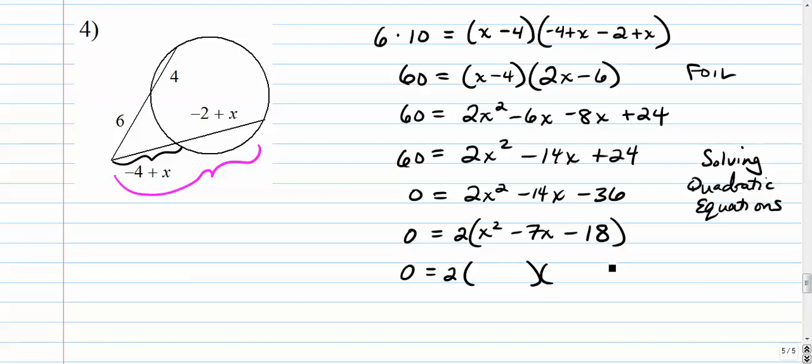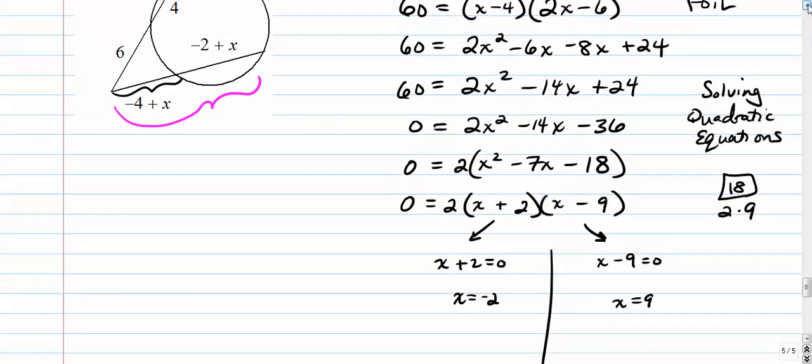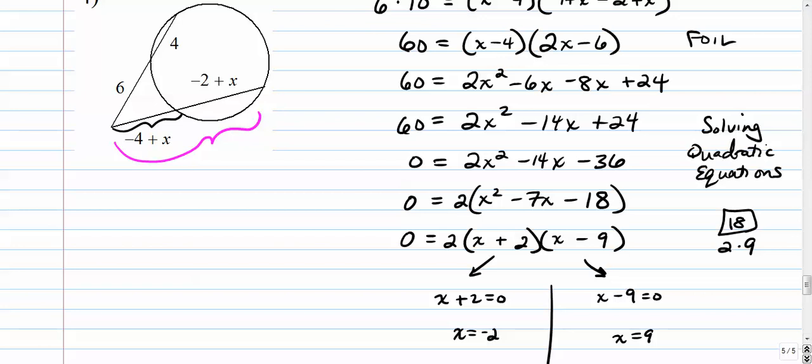So now we're trying to factor this little guy. So we're looking for numbers that multiply to 18 and add or subtract to 7. So it's 2 and 9 minus and plus. And if you want to check that before you proceed, you certainly can. Use the zero product property again. Branch out. Set both of them equal to zero. We get negative 2 and positive 9.